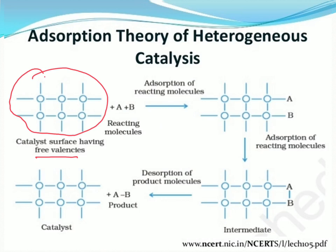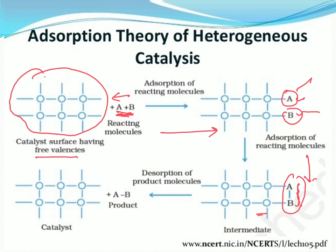इसको ऐसे भी समझ सकते हैं: catalyst surface पर free vacancies होती हैं। Reacting species A और B उन vacancy positions पर attached होते हैं — A एक vacancy पर, B दूसरी vacancy पर। फिर A और B के बीच reaction होता है, bonding हो जाती है और product बनता है। पहला step adsorption होता है, उसके बाद desorption होता है — यानि जो molecules catalyst के साथ attached थे वो combine होकर product बना लेते हैं और catalyst की surface छोड़ देते हैं। This is the adsorption theory of heterogeneous catalysis।